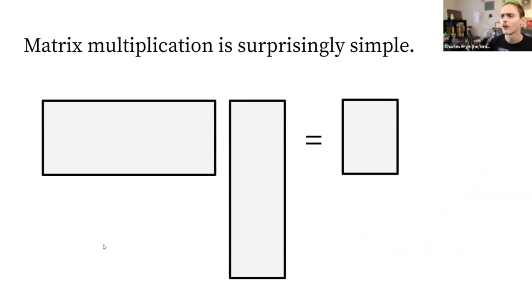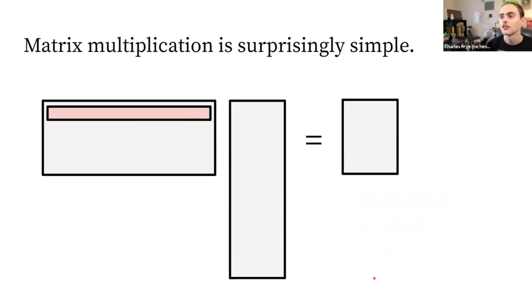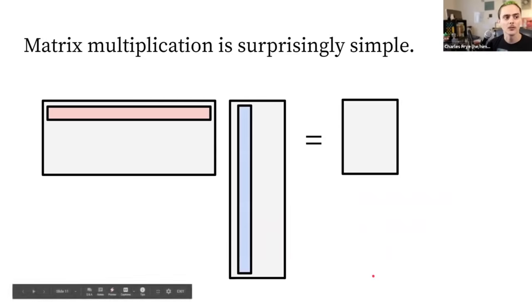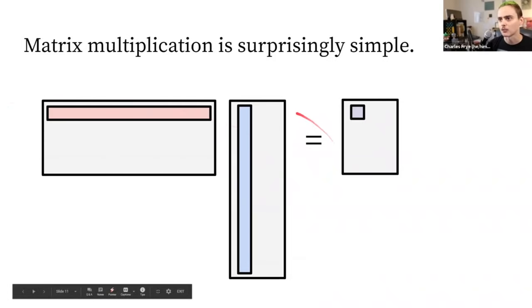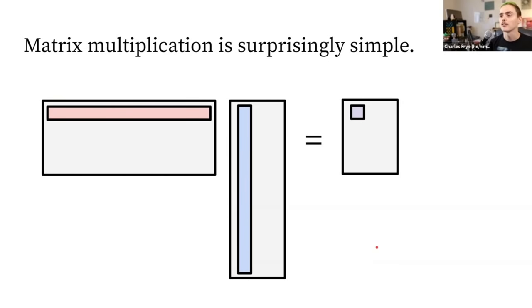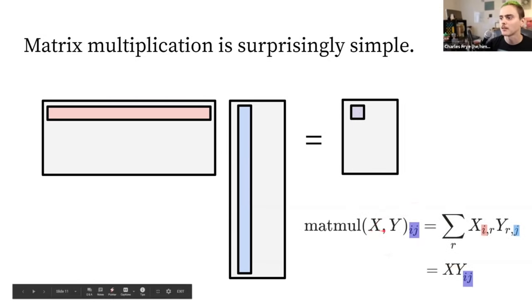Matrix multiplication is surprisingly simple. We have two arrays on the left of the equals sign and get an output array. To multiply two matrices: take the rows of the first matrix and the columns of the second, take each number in a row and each number in a column, multiply them together, then add up all those products — reducing them down with a sum operation.